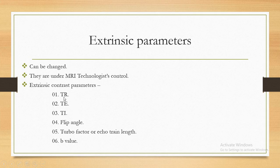এই সব parameters-কে extrinsic parameters বলা হয়। TR হলো repetition time, TE হলো echo time, TI হলো inversion time। কেউ চাইলে TR 200, 300, বা 600 করতে পারে — এটা কমানো-বাড়ানো technologist-এর হাতে আছে। কেউ চাইলে flip angle 60, 90, বা 180 degree করতে পারে। এই সব parameters যেগুলো change করা possible, সেগুলোকে extrinsic contrast parameters বলা হয়।